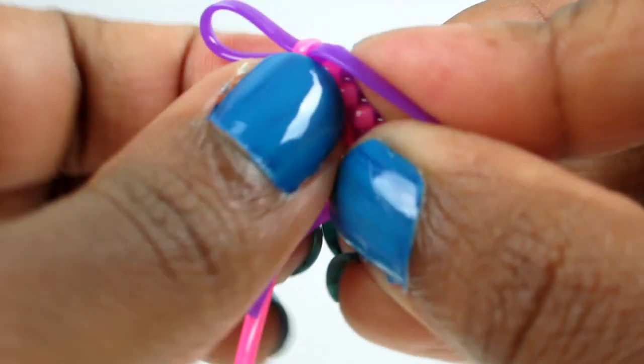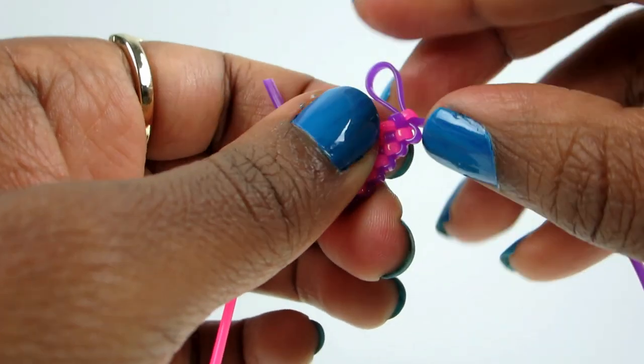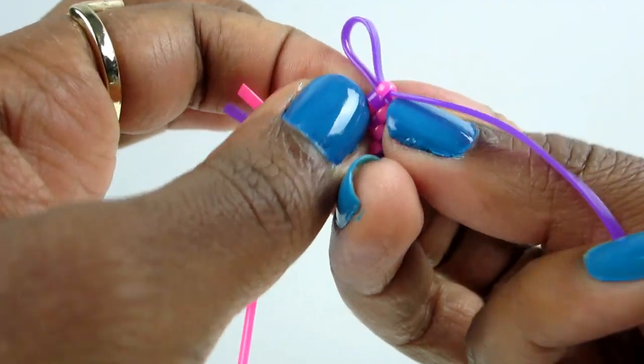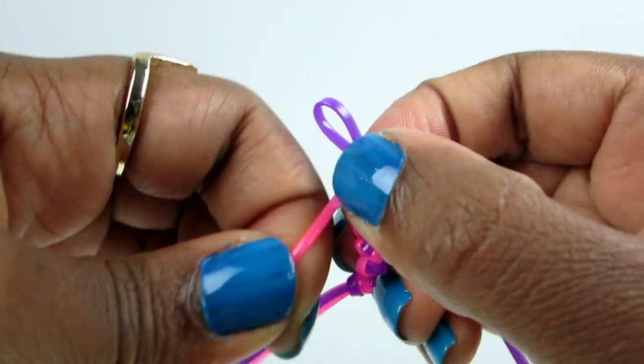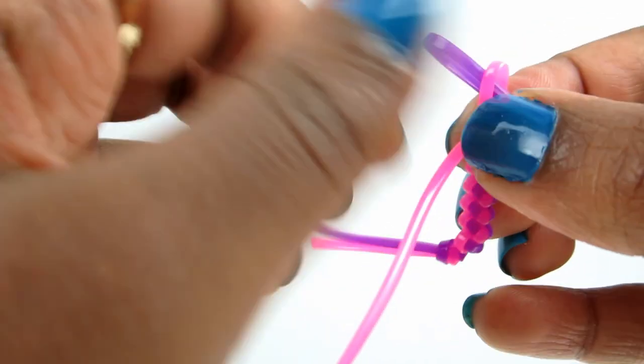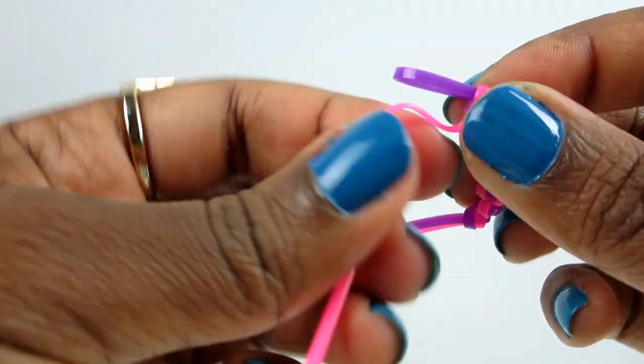and then pull down. And so this is how you make a butterfly gimp bracelet.